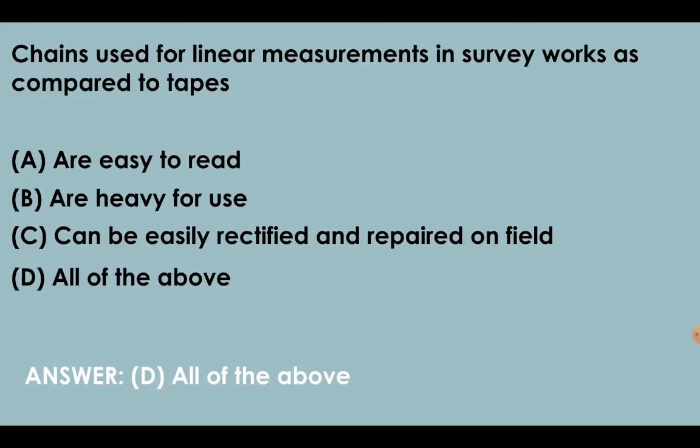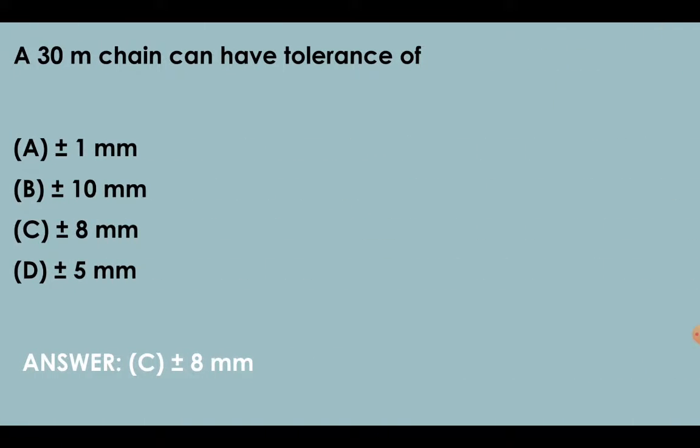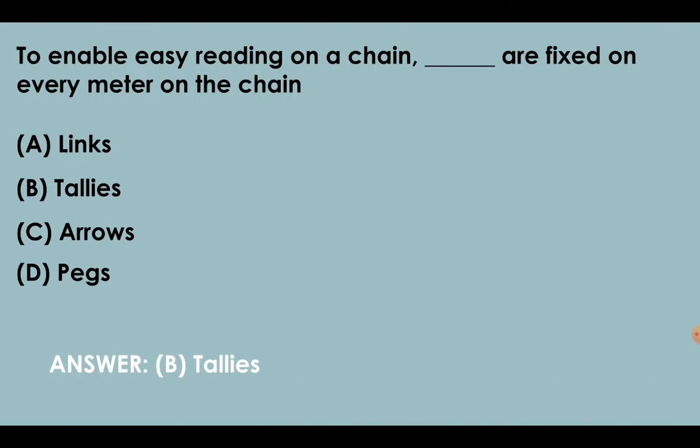Chains used for linear measurements in survey work, as compared to tapes, are easy to read but are heavy to use and can be easily rectified and repaired on the field. A 30-meter chain can have a tolerance of plus minus 8 mm. For 20-meter chain it was plus minus 5 mm, and for 30-meter chain it is plus minus 8 mm. To enable easy reading on a chain, we provide tallies on every meter.